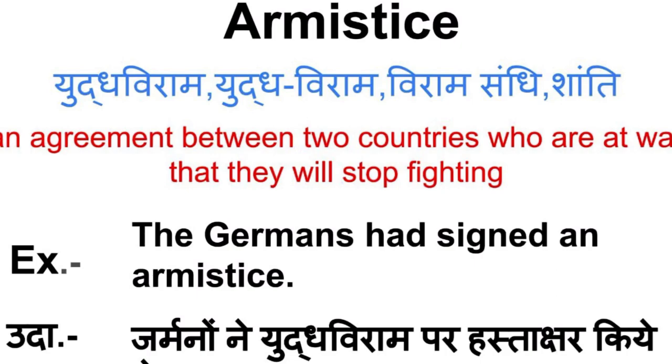For example, the Germans had signed an armistice — meaning the Germans had signed a Yudhaviraam per hastakshar kiye thay.